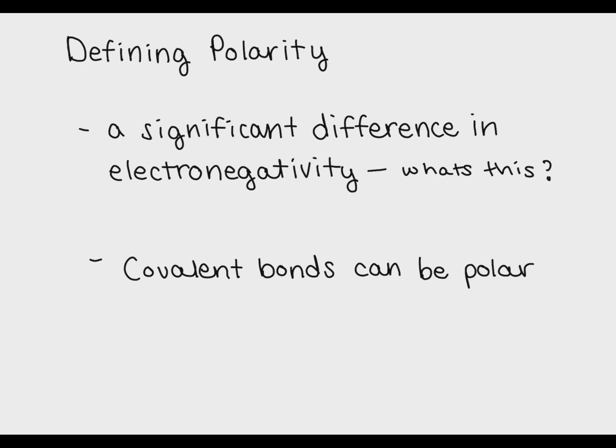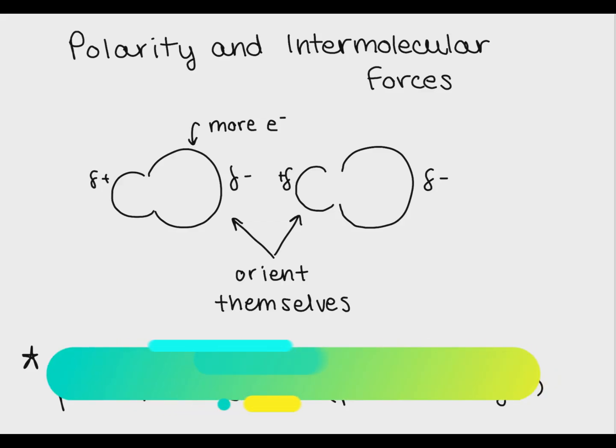So a dipole moment is when there's a temporary shift in the distribution of electrons that creates partial positives and partial negatives on a covalently bonded molecule. As you can see here, when covalently bonded molecules develop dipoles, they can orient themselves so they have a dipole-dipole interaction, which is a type of intermolecular force. This is only possible because of the temporary polarity of the molecule.